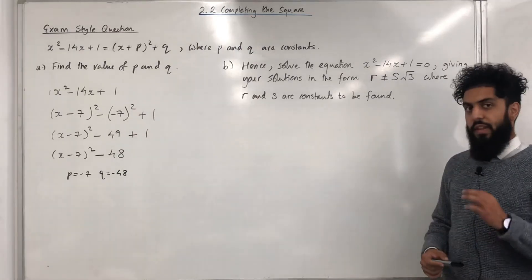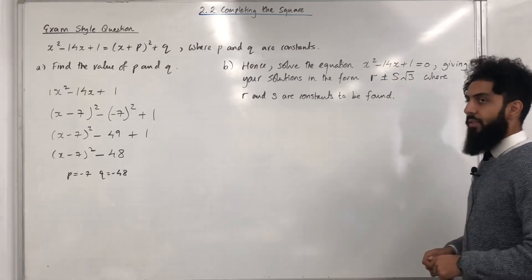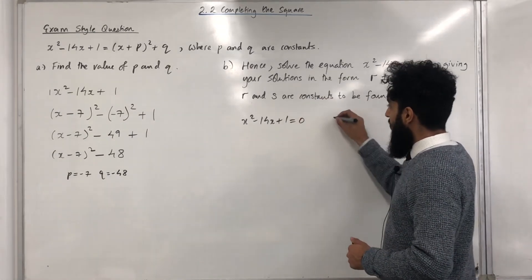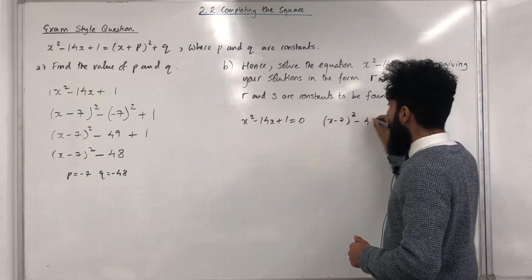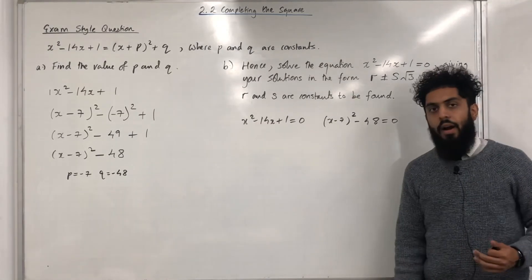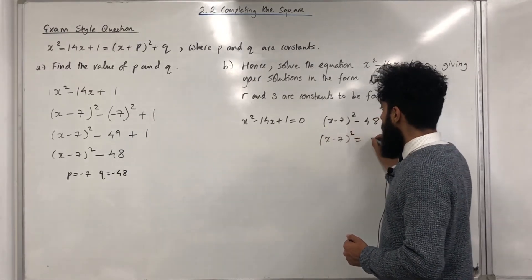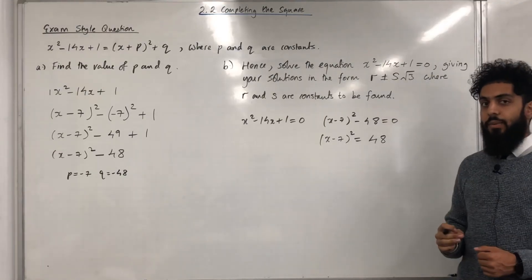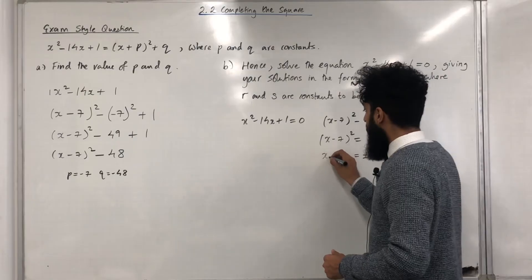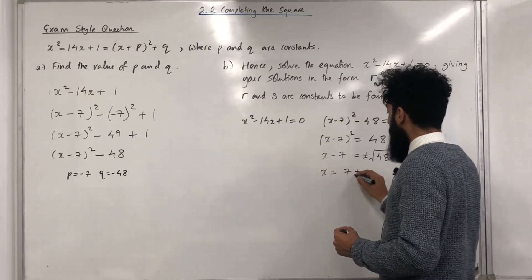Moving on to Part B. Since it says 'hence', we refer back to Part A. Solving x² − 14x + 1 = 0 is the same as solving (x − 7)² − 48 = 0. Taking 48 to the right-hand side gives (x − 7)² = 48. Taking the plus or minus square root gives x − 7 = ±√48, so x = 7 ± √48.